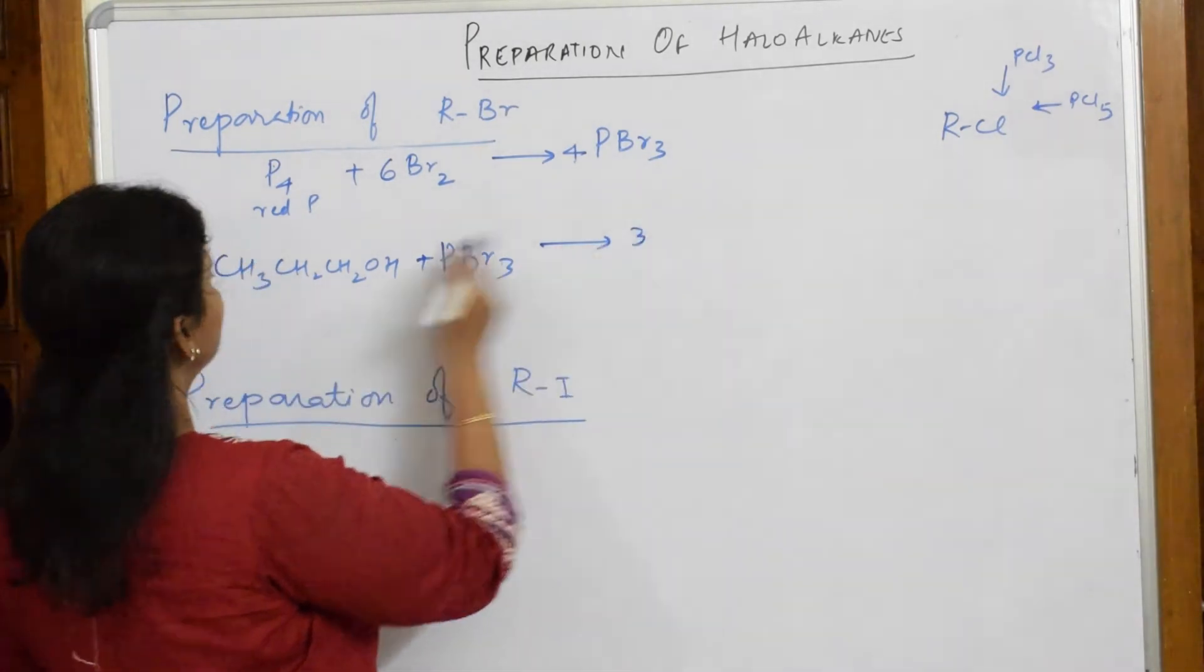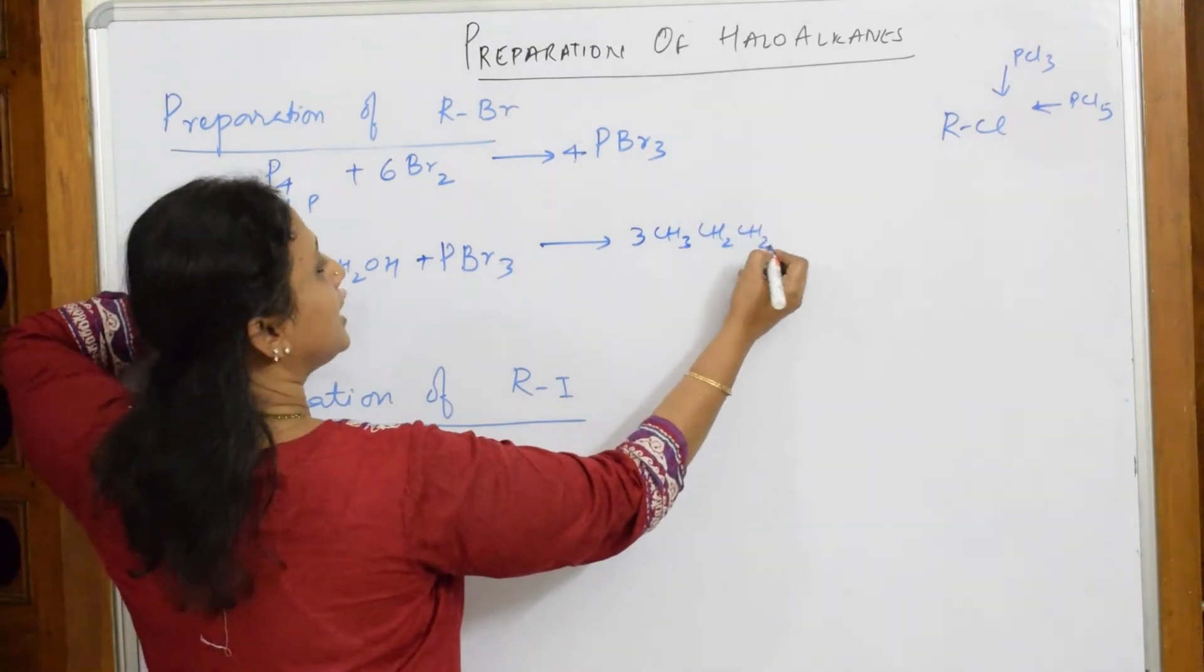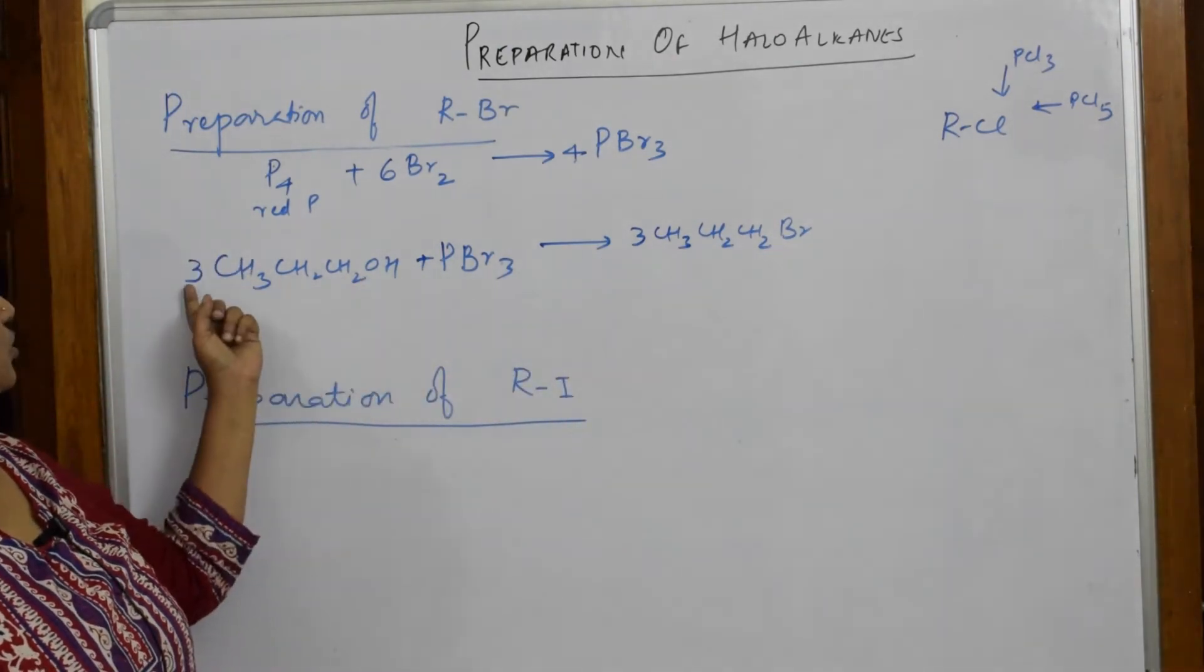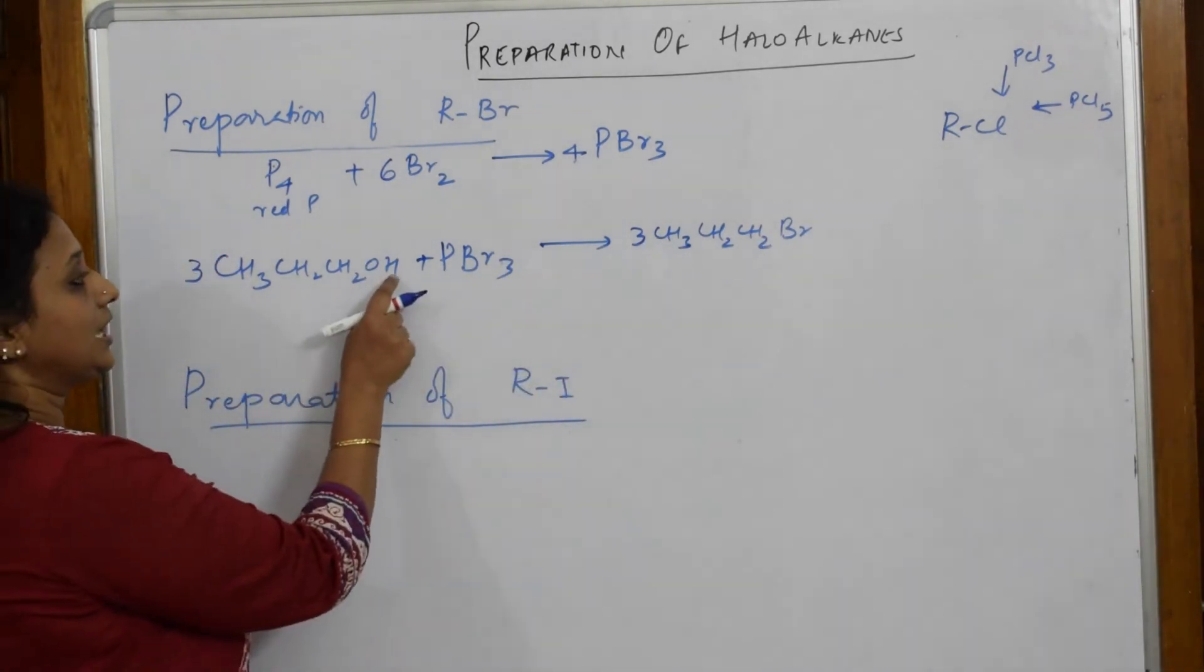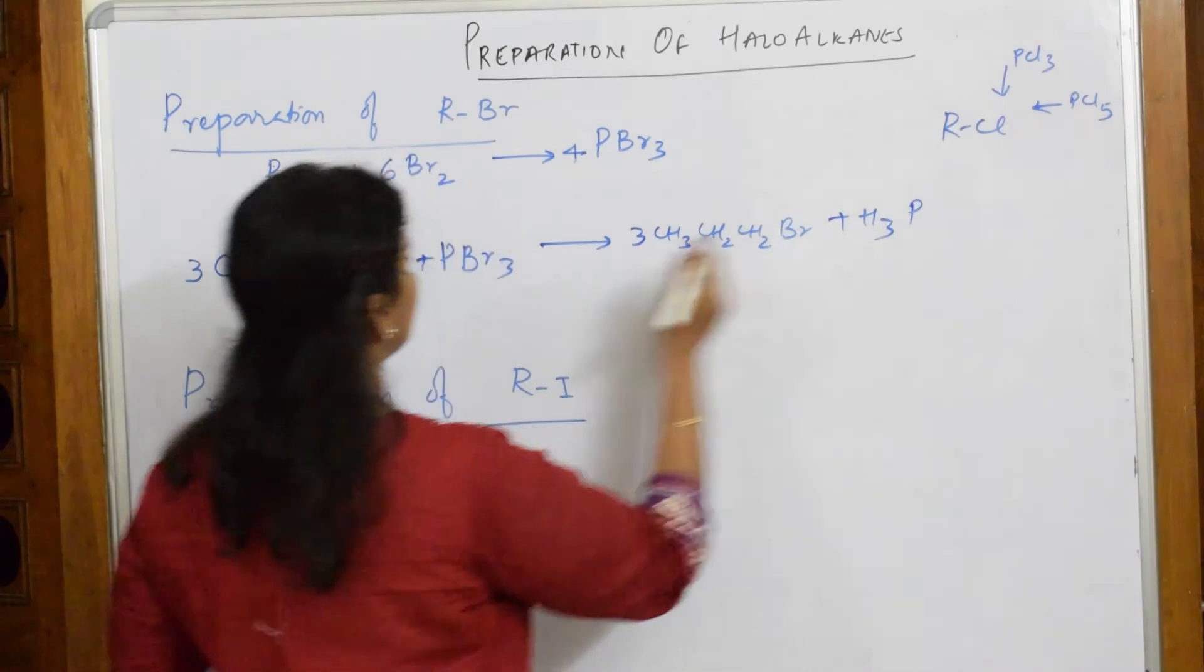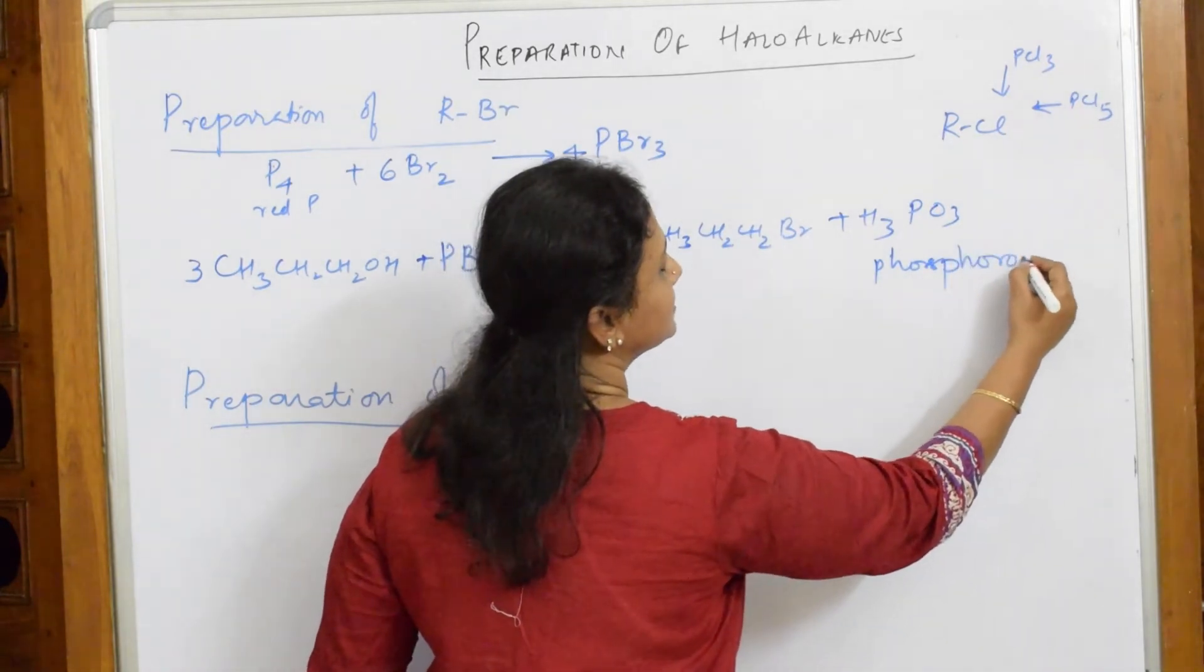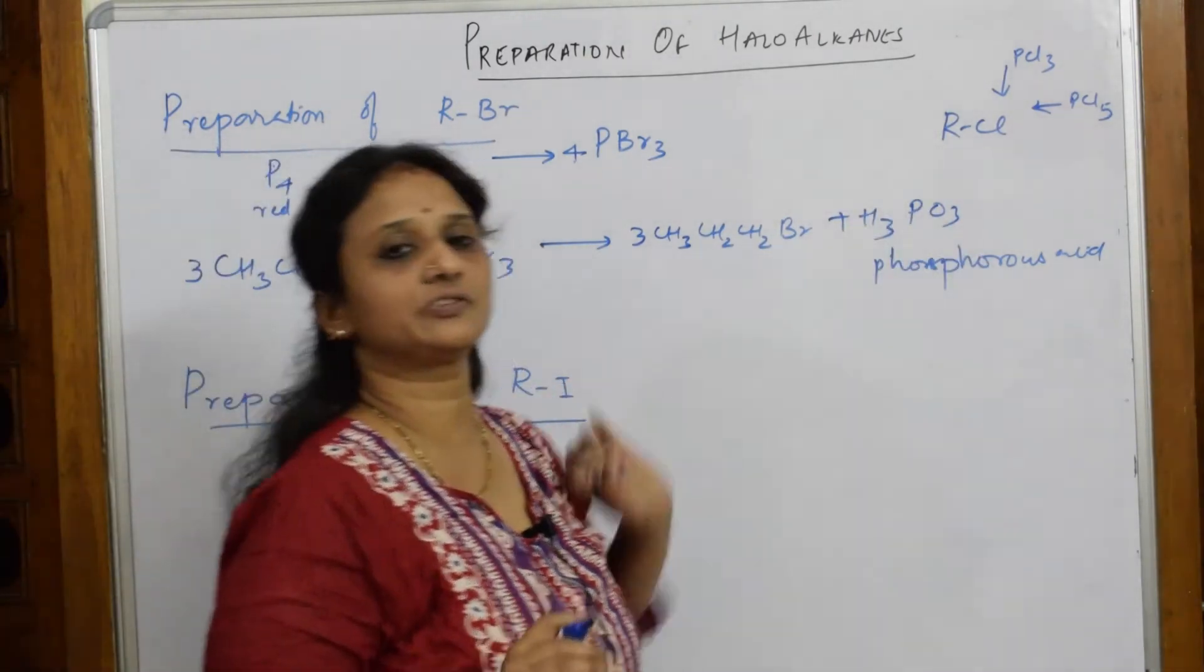So what product will I get? Copy the same. 3 CH3CH2CH2BR. Now let us see whether it is balanced. 3 alkyl groups, done. Your bromines are 3 because 3 have replaced. Now what else is left? H is 3, H3. Phosphorus 1, oxygen is 3. H3PO3, phosphorus acid. So remember, PCL3 or PBR3, the byproduct is phosphorus acid.